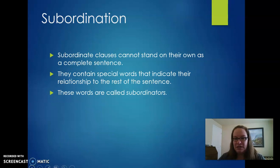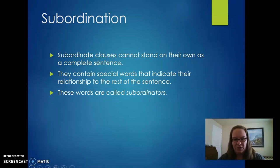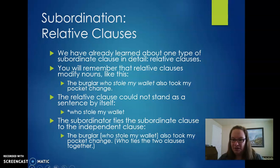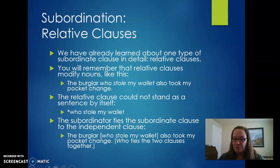Subordinate clauses contain a special word that indicates their relationship, so when we're looking for this type of clause, we can find it with the subordinator. We have seen this before in the presentations for this course when we talked about relative clauses and relative pronouns. Relative clauses modify nouns, like: 'The burglar, who stole my wallet, also took my pocket change.' The clause 'who stole my wallet' is a dependent clause and can't stand by itself — it's joined with the relative pronoun 'who,' which is a subordinator.